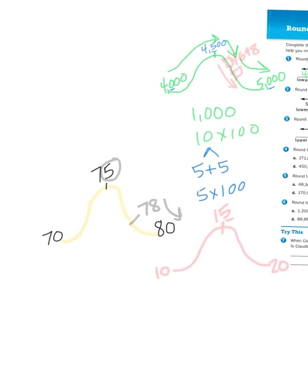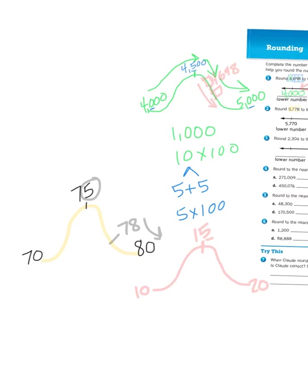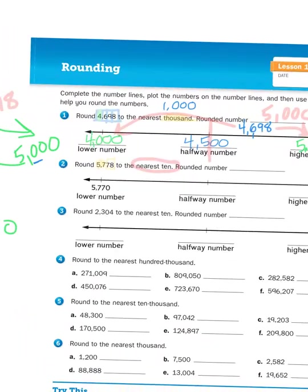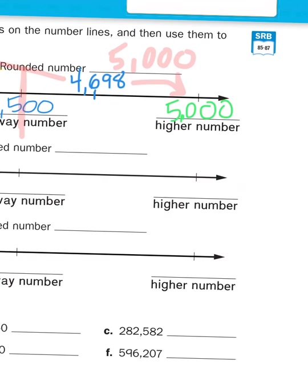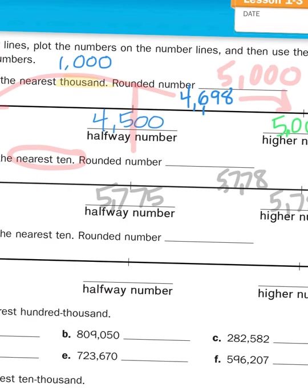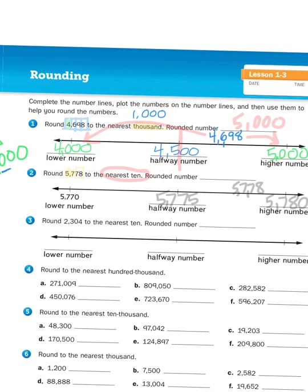Thinking about the roller coaster: once you get to the 78 point on that hill, you're practically there, just coasting into the next place value. So on the number line: 5,770 is the low number, the next place value is 5,780, the halfway point is 5,775, and my number 5,778 would live just past that halfway point. So if I round to the nearest 10, I would round to 5,780.